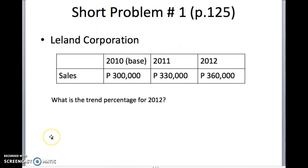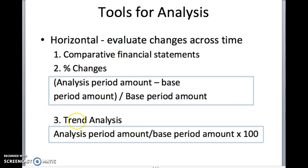You can actually see this in your workbook on page 125. This pertains to Leland Corporation, problem number one. Suppose you're given a sales value for 2010 amounting to 300,000 pesos, and then you have the following values for year 2011 and 2012. Let's say you want to compute for the trend percentage for 2012. The trend percentage formula is: analysis period amount divided by base period amount times 100.